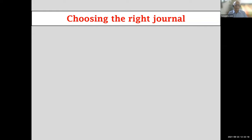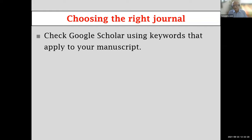That journey begins from choosing the right journal. Papers are often rejected without review simply because they don't fall within the journal's scope. It is vitally important to find the right home for your paper. One approach is to use Google Scholar — assuming your manuscript is practically ready with a title and abstract — copy the title and paste it in the Google Scholar search box, then watch which journals occur most frequently in the results.